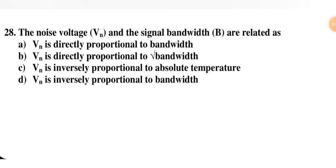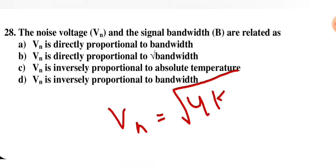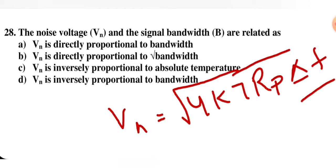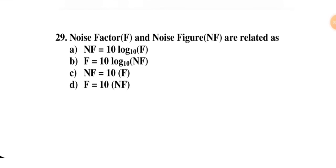The noise voltage Vn and signal bandwidth are related as — Vn directly proportional to bandwidth, Vn directly proportional to square root of bandwidth, Vn inversely proportional to absolute temperature, or Vn inversely proportional to bandwidth. The formula is Vn = √(4kTRΔf), which means Vn is directly proportional to the square root of bandwidth. So B is the correct option.